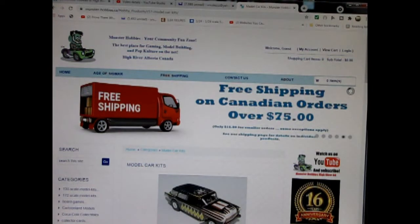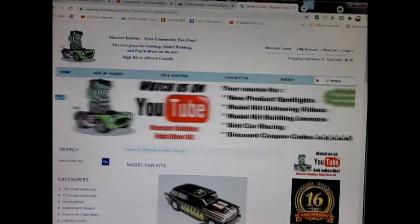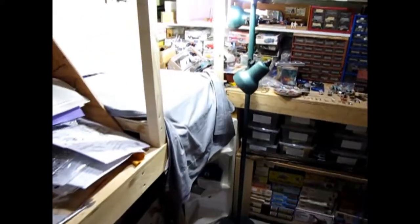Today we will be looking at the 1973 Mercury Cougar Street Machine by AMT Ertl. Now this one's out of my own personal collection, however you can see all of our available model kits at www.monster-hobbies.ca. I will leave a link in the description below. Now let's go down to our bench and see what's in the box.